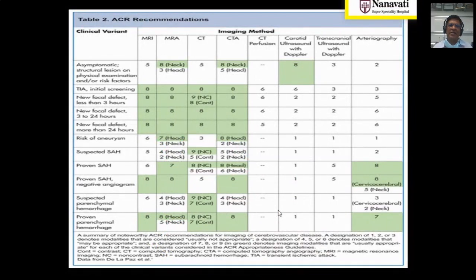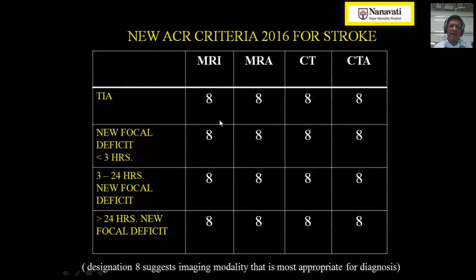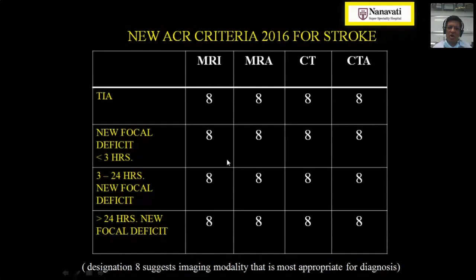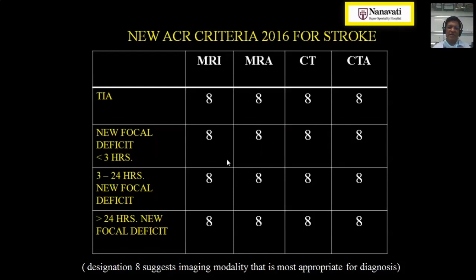The ACR guidelines of 2016 state that whether dealing with TIA, hyperacute, acute, or early subacute stroke, all four modalities — MRI, MRA, CT, and CT angiography — receive a score of 8 out of 8, meaning all are considered most appropriate investigations. It really depends on how prepared your institution is to treat and image these patients.